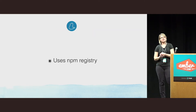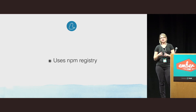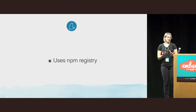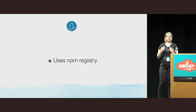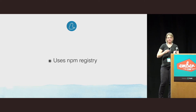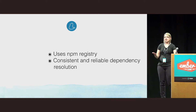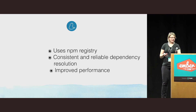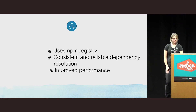In October 2016, engineers from companies like Google, Exponent, and Tilda all got together at Facebook and built Yarn. Yarn builds upon the good parts of NPM, so it uses the NPM registry, but it tries to address the shortcomings — it promises consistent and reliable dependency resolution and improved performance.